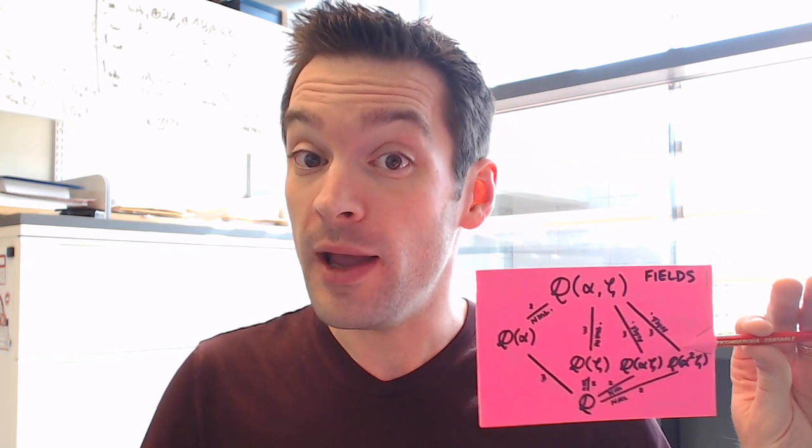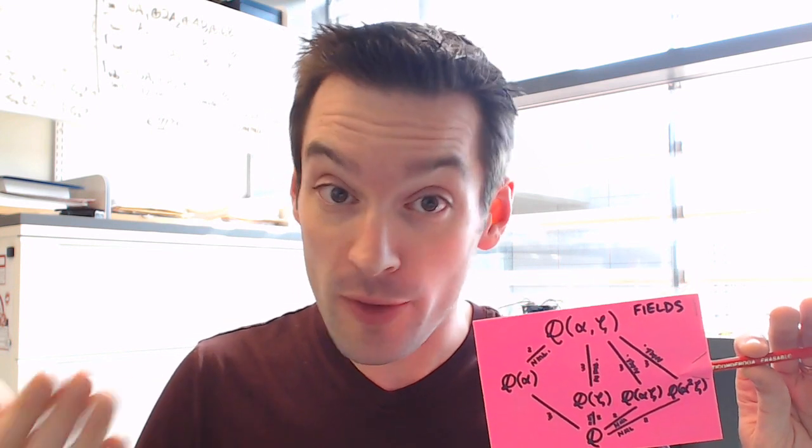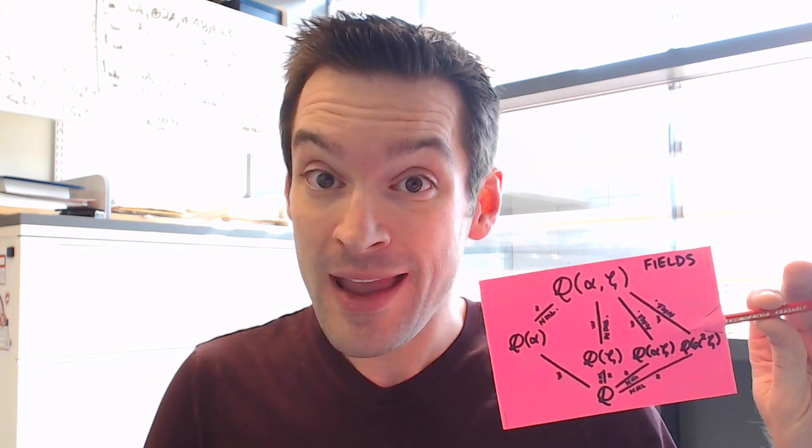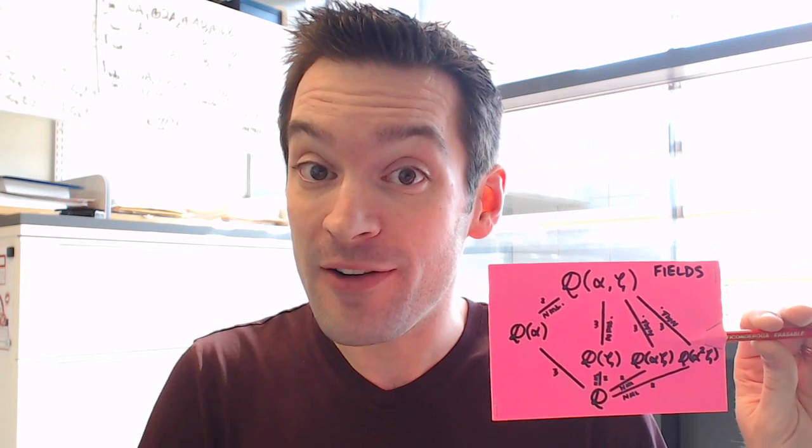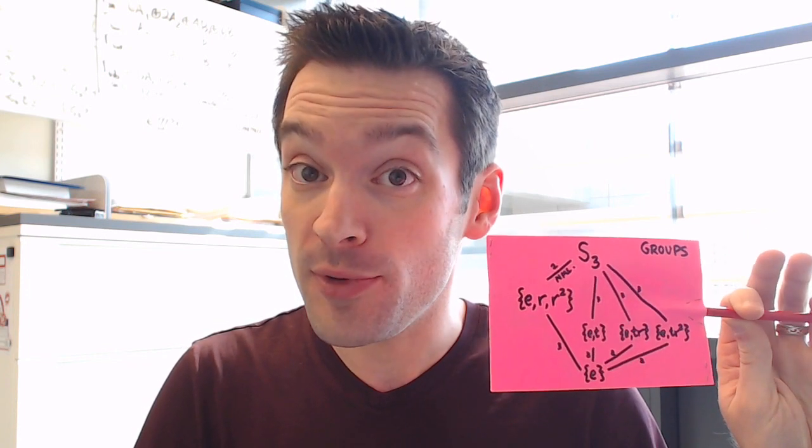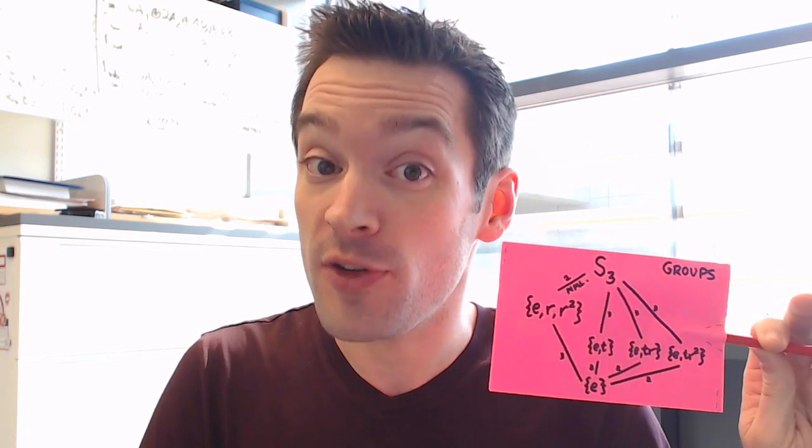In our quest to understand why quintic polynomials don't have a formula in radicals to solve them, we first need to figure out how exactly we will know when a polynomial has a solution for its roots in simple radicals. The Galois correspondence gives us a way of taking a field extension — for example, the splitting field of a polynomial — and translating any question about that field into a question about groups, specifically the automorphism groups associated with that extension.